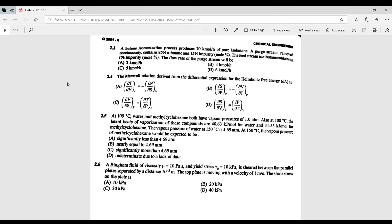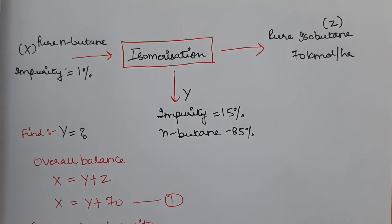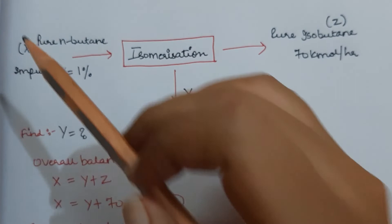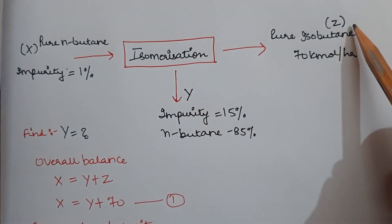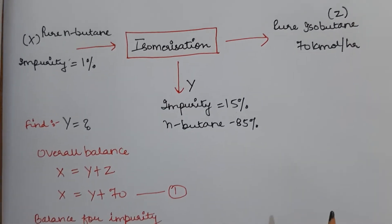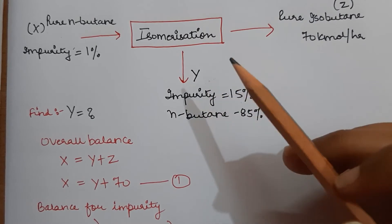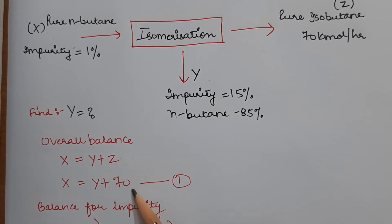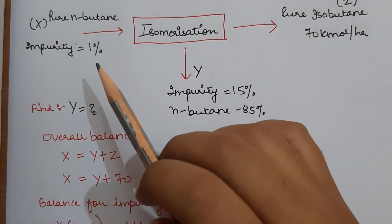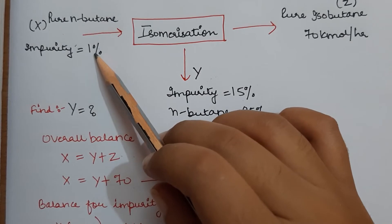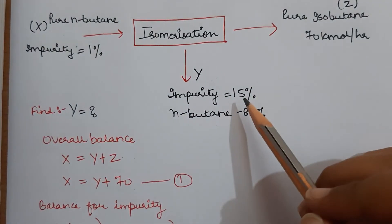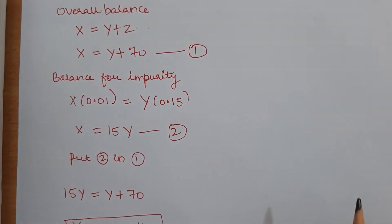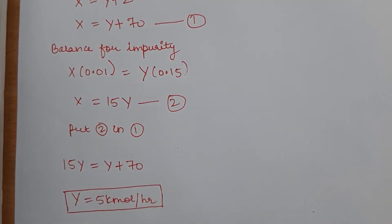Question 2.3 is related to purging in an isomerization process. All mole percentages of components are given and we need to find the flow rate of the purge stream. Let feed flow rate = x, purge flow rate = y, and product flow rate = z = 70 kmol/hr. From overall balance: x = y + z (equation 1). Performing a component balance on the impurity gives y = 5 kmol/hr.